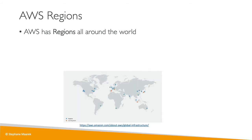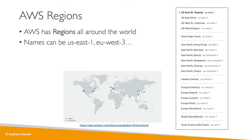The first important concept in AWS is regions. Regions are all around the world, as we saw on the map. They have names like US-East-1 or EU-West-3, and we can see the mapping of region names to their codes in the console. A region is truly a cluster of data centers located near a specific area, such as Ohio, Singapore, Sydney, or Tokyo.